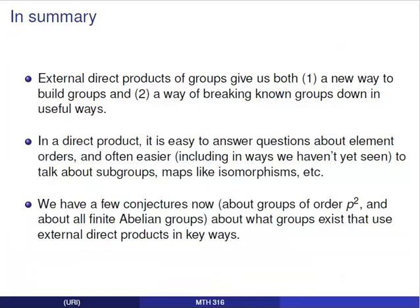To wrap up our discussion of direct products, external direct products of groups give us both a new way to build groups from others and a way of breaking down known groups in useful ways. In a direct product, it is easy to answer questions about element orders, and often easier to talk about subgroups or maps like isomorphisms. We now have the vocabulary to address conjectures about groups of order p² and about all finite abelian groups.